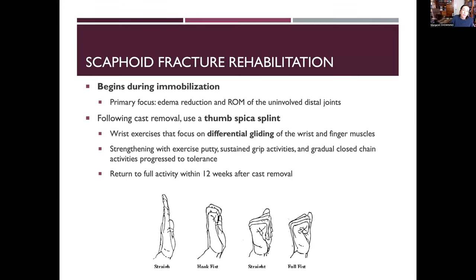Scaphoid fracture rehab begins during immobilization, focusing on edema reduction and range of motion at uninvolved distal joints. After cast removal, a spica splint is used. Wrist exercises focus on gliding of wrist and finger muscles through tendon sheaths to prevent adhesions. Strengthening with putty, grip activities, and closed-chain weight-bearing through the hand can be added once cleared, with return to full activity within 12 weeks of cast removal.